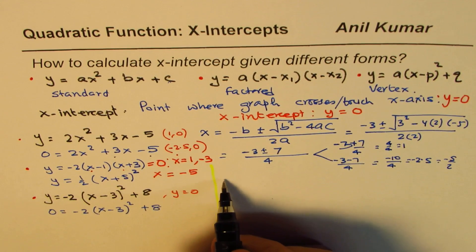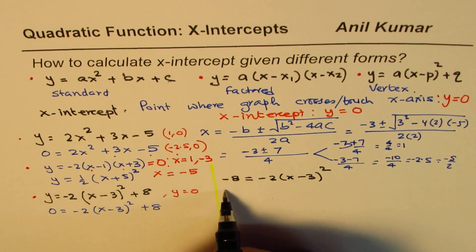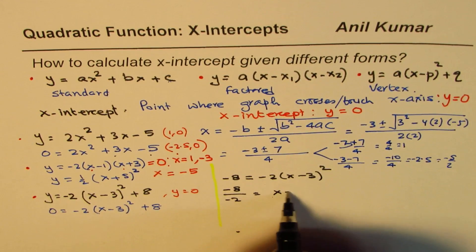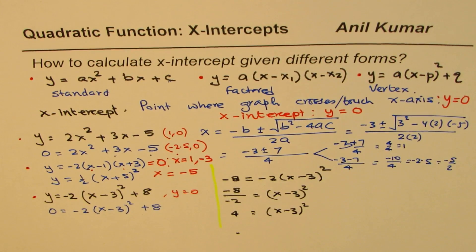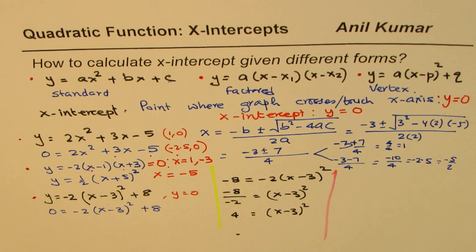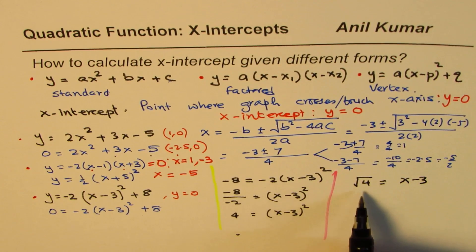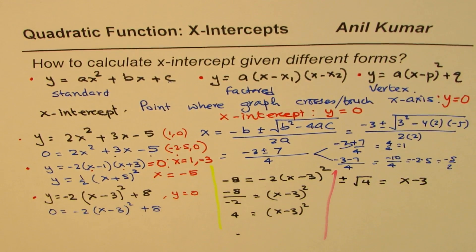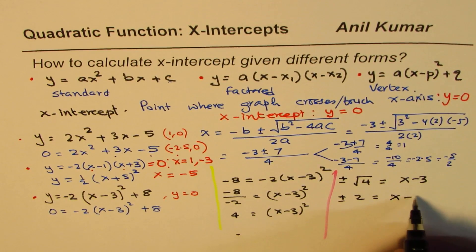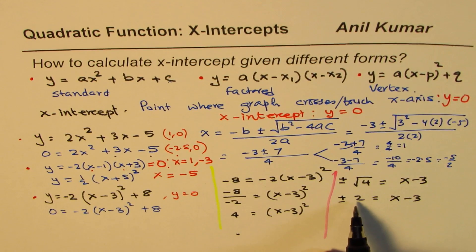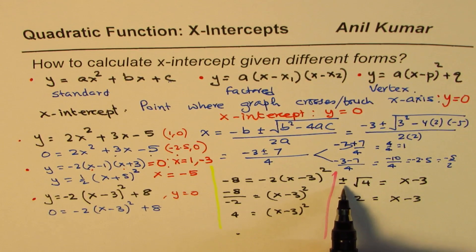Bring the 8 to the left side: negative 8 equals negative 2 times (x minus 3) squared. Divide both sides by negative 2: 4 equals (x minus 3) squared. Now take the square root of both sides — and it is extremely important to include plus and minus. So we get plus or minus 2 equals x minus 3. This is important because both minus 2 squared and plus 2 squared equal plus 4, so without the plus-minus you lose one of the roots.